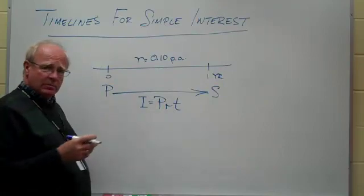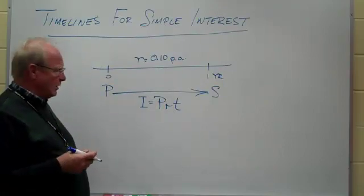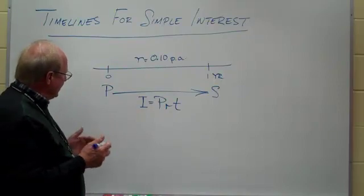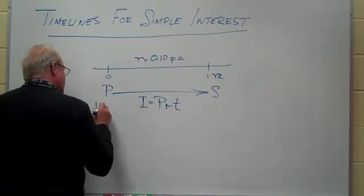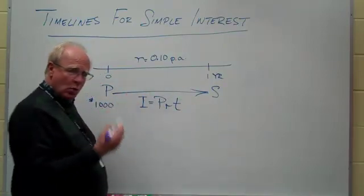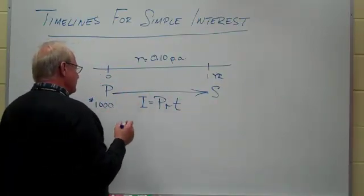Now that means if one year goes by, we will charge 10% interest. And we'll borrow a certain amount of money, let's say we borrow $1,000, and we have a time frame here that's one year. So if we substitute it into this formula, we would have the interest as the $1,000 times the rate of 10% times the time of one year.